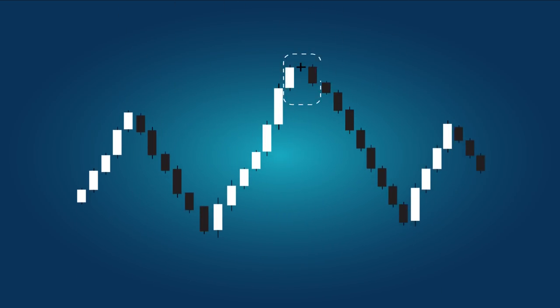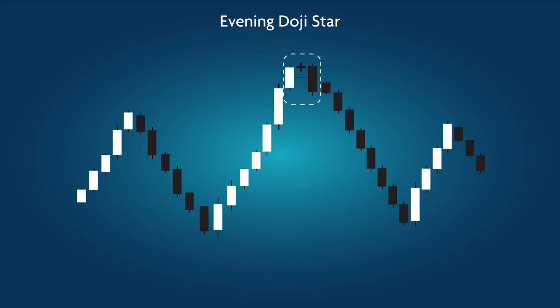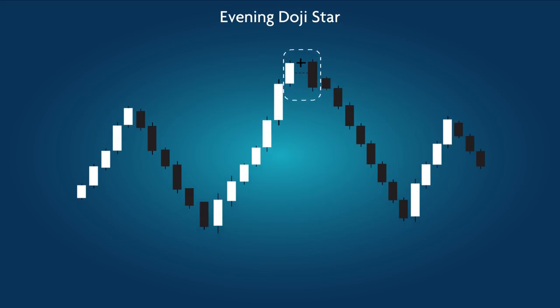Evening Doji Star: a bearish pattern in which the Doji heading the trend indicates pattern reversal, and the black candle following it falls at least halfway below the body of the clear candle preceding the Doji.